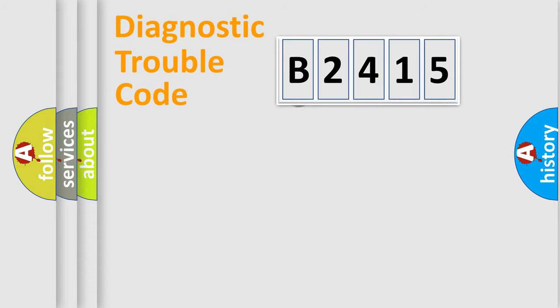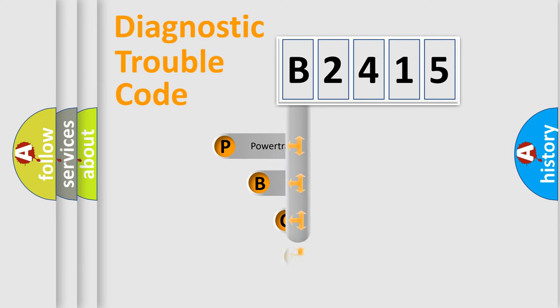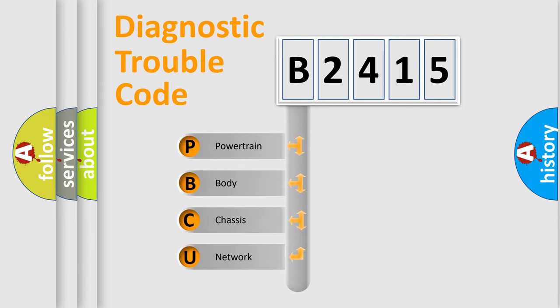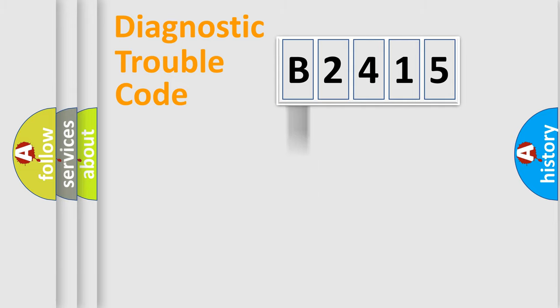Let's do this. First, let's look at the history of diagnostic fault code composition according to the OBD2 protocol, which is unified for all automakers since 2000. We divide the electric system of the automobile into four basic units: Powertrain, Body, Chassis, and Network.